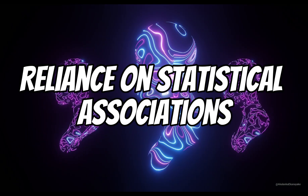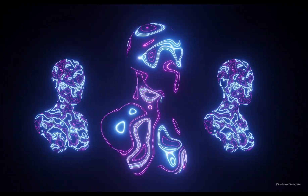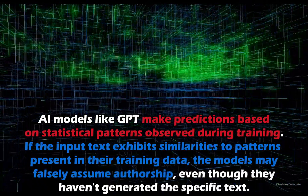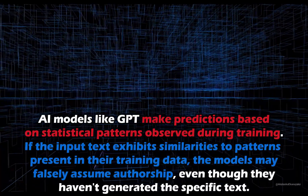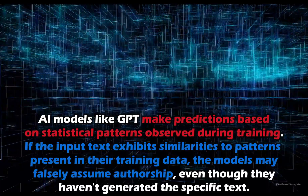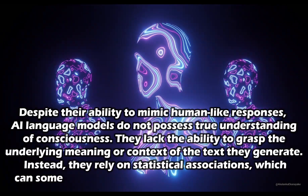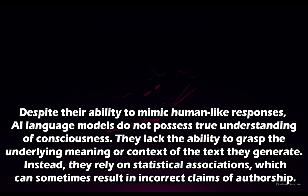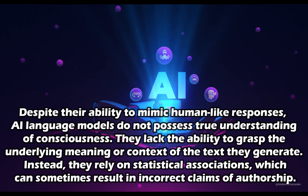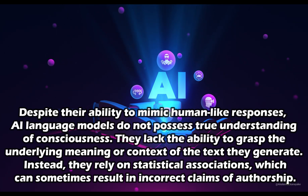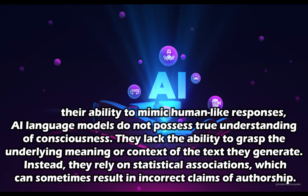Number 3: Reliance on statistical associations. Another factor is the reliance on statistical associations. AI models like GPT make predictions based on statistical patterns observed during training. If the input text exhibits similarities to patterns present in their training data, the models may falsely assume authorship, even though they haven't generated the specific text. Additionally, the lack of genuine comprehension poses challenges. Despite their ability to mimic human-like responses, AI language models do not possess true understanding or consciousness. They lack the ability to grasp the underlying meaning or context of the text they generate.